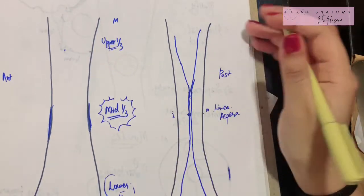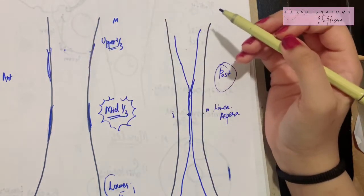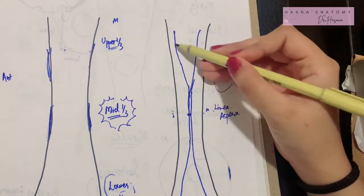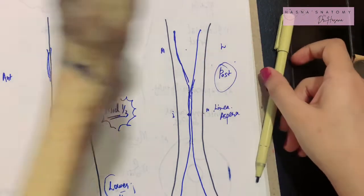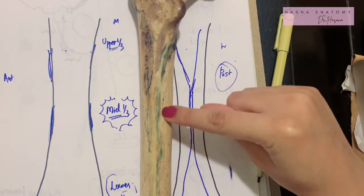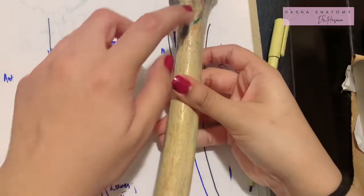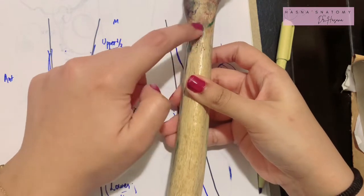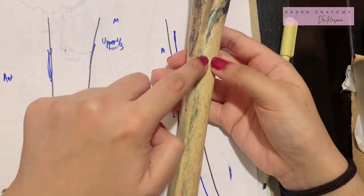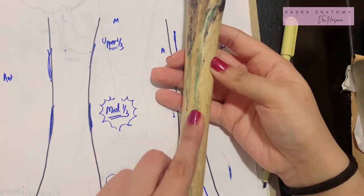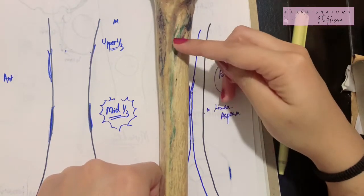Let's talk about the upper third — this is all occurring posteriorly. For every third of your shaft, you will have to give a medial and lateral border and add additional borders. In the case of the upper one-third, there is no posterior border as such. The intertrochanteric line anteriorly crosses the base of the lesser trochanter as the spiral line. One of the borders of the upper one-third is known as the spiral line — the border that lies more medially.